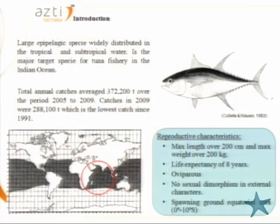Yellowfin tuna is a large epipelagic species, widely distributed in tropical and subtropical waters, and it is the major target species for tuna fisheries in the Indian Ocean. It is remarkable that catches in 2009 were the lowest since 1991. This species has a maximum length of 200 cm, a maximum weight of 200 kg, a life expectancy of 8 years, is viviparous with no sexual dimorphism in external characters, and has a spawning ground in the equatorial area.